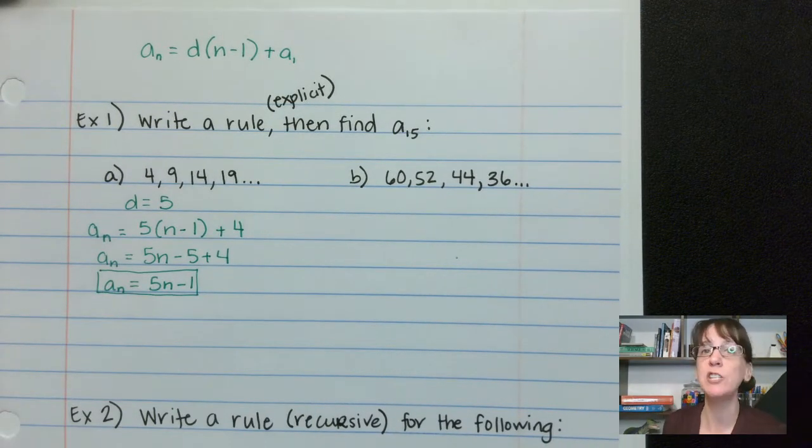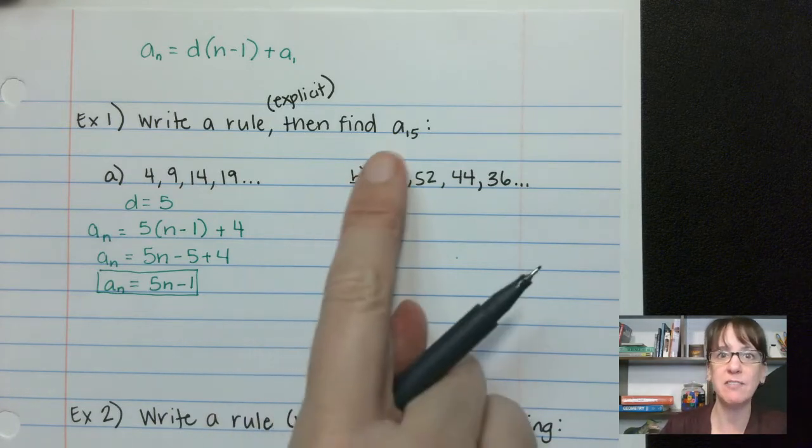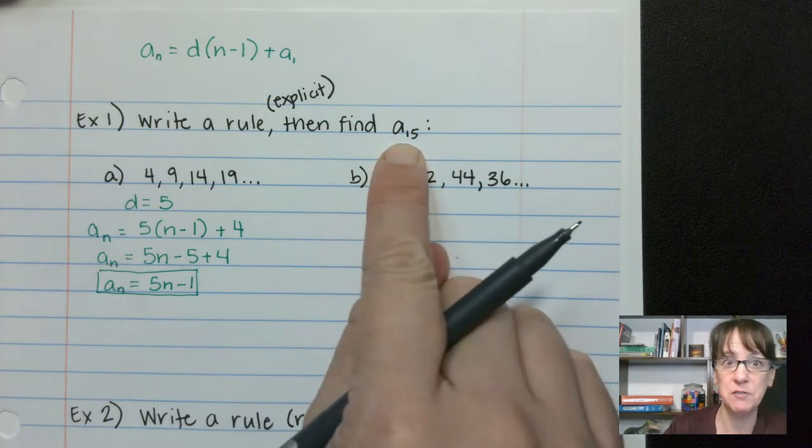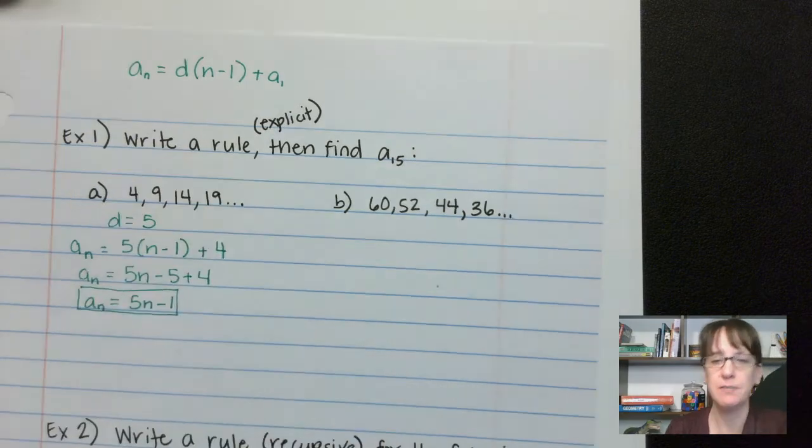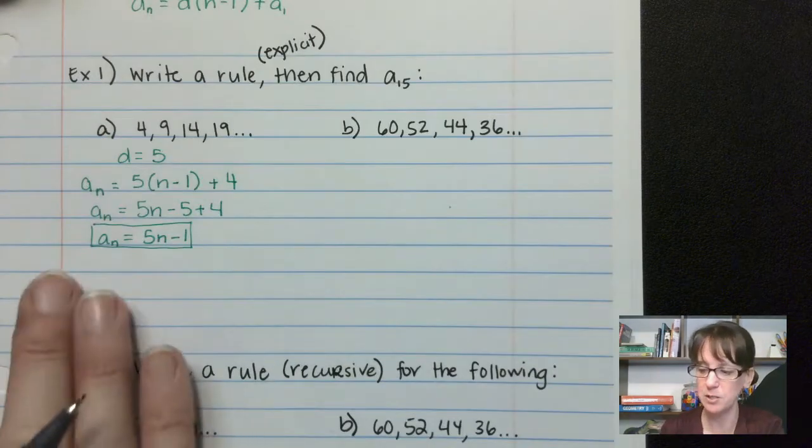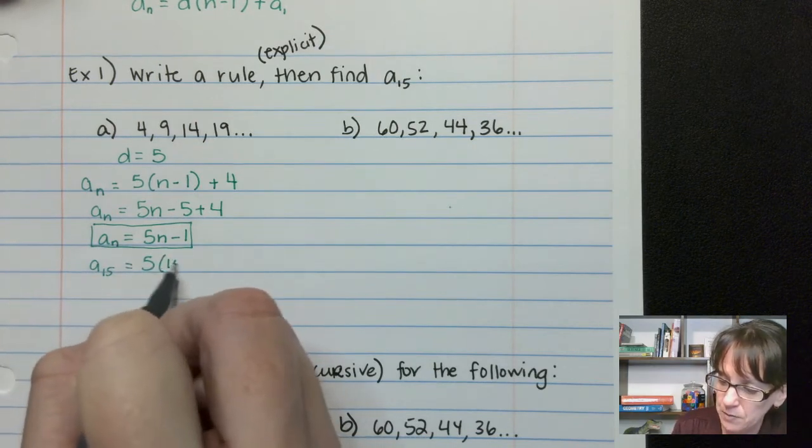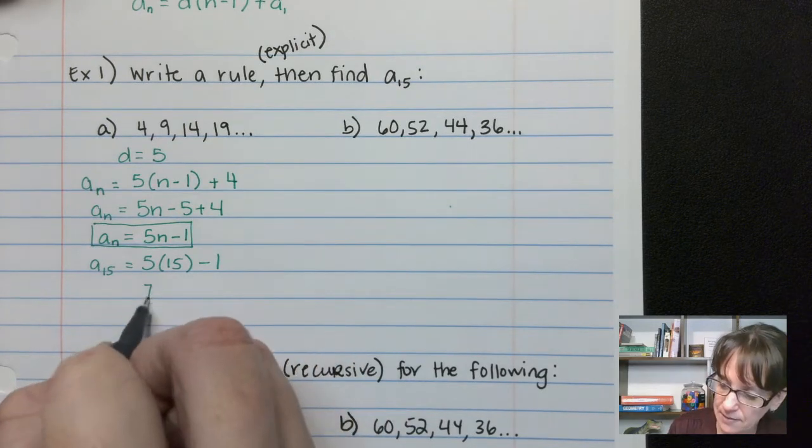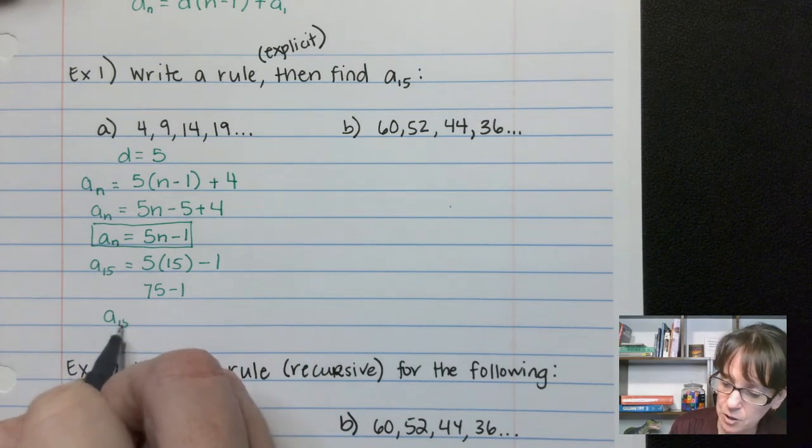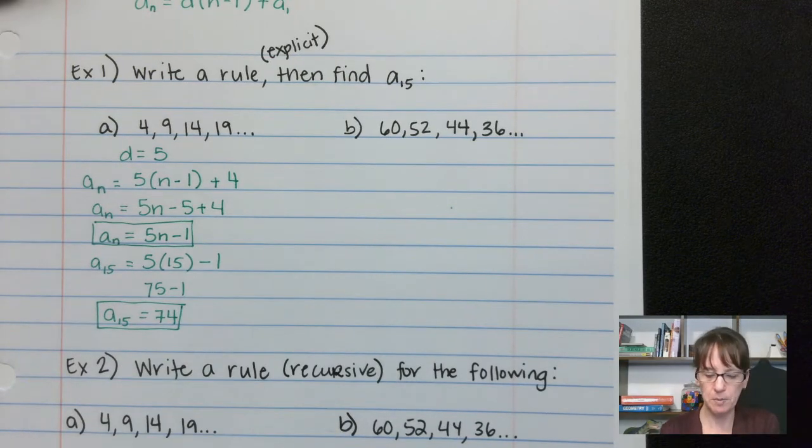Now that we have that rule, we can use that to find any position anywhere in this sequence, but I want to find specifically what happens in position 15. I have 1, 2, 3, 4 positions here. I could sit here and do 5, 6, 7, all the way up to 15, or I could use this rule here and say a_15 is 5 times 15, whatever that is, we're going to minus 1. So we take 15, multiply that by 5 and we get 75 minus 1. So we get in position 15, we would have 74 as our answer. So hopefully that makes a little bit more sense.